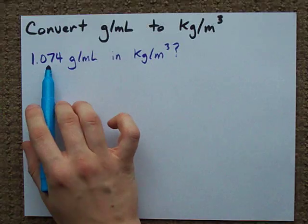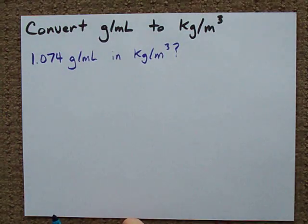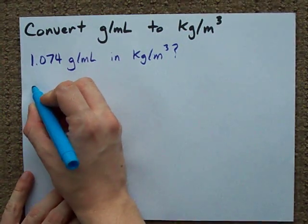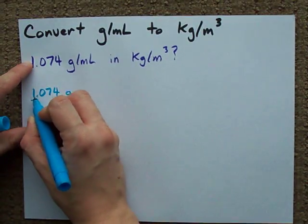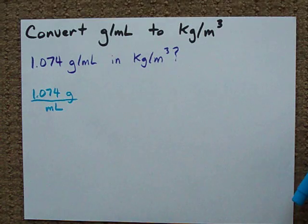Let's do it for 1.074 grams per milliliter. The first thing I want you to do is to write out your number, 1.074 grams per milliliter. And I want you to write it vertically like this.